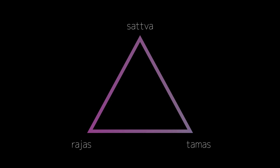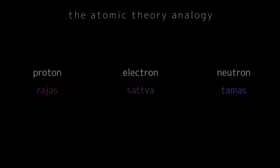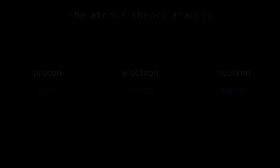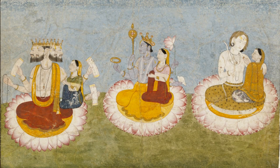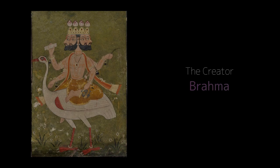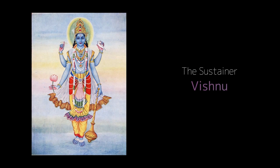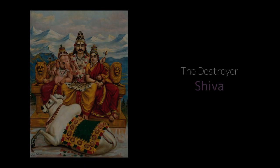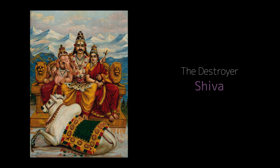One way to understand them is by relating them with the atomic theory. The atomic theory states that the atom is made up of three particles: electron, proton, and neutron. The only difference is that the gunas are not particles but rather tendencies or attributes. The gunas have also been defined in the form of Brahma, Vishnu, and Shiva — where Brahma is the creator, denoting rajas; Vishnu is the sustainer or protector, denoting sattva; and Shiva is the destroyer, denoting tamas.